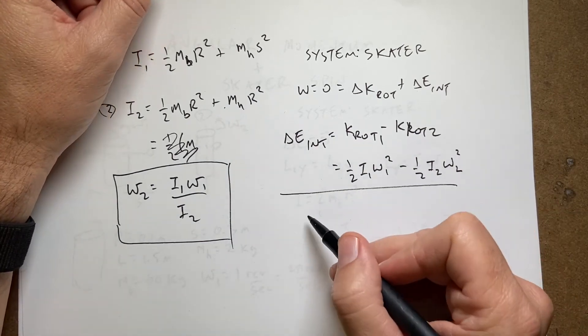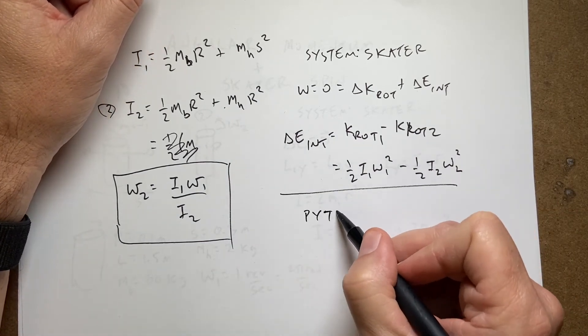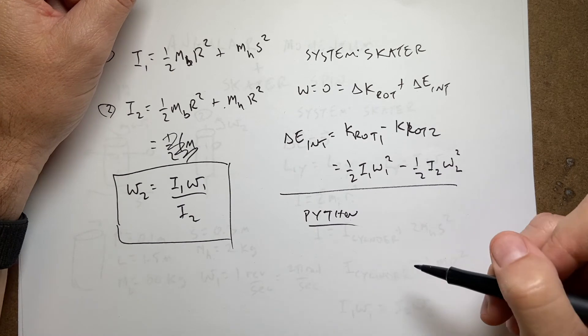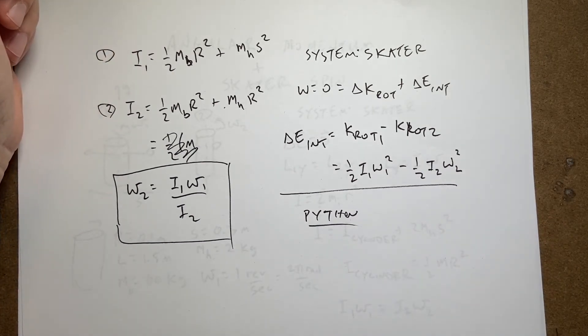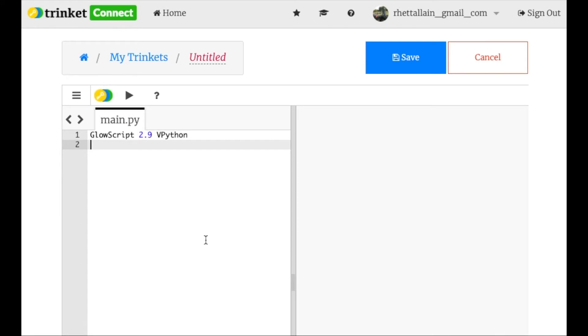So now we're going to put this into python as my calculator and I'm going to show you how to do that right here. Okay so I got GlowScript here. You definitely want to make sure you use GlowScript not just plain python because it has some things in there that are very physics oriented and are going to help you out a lot.